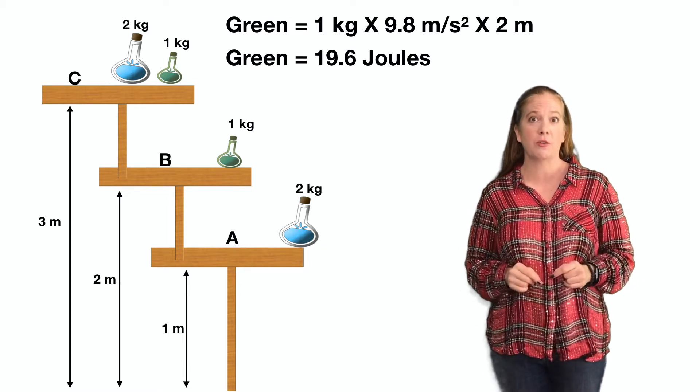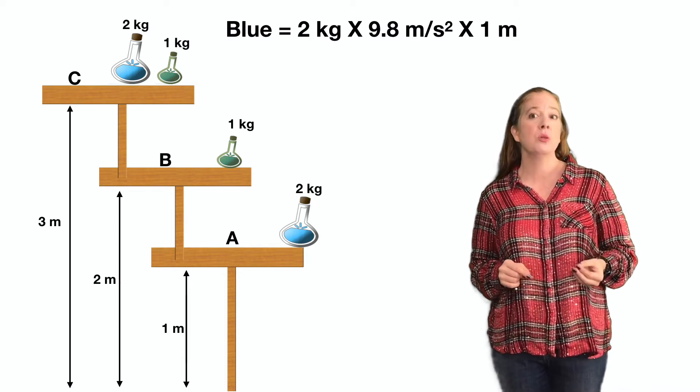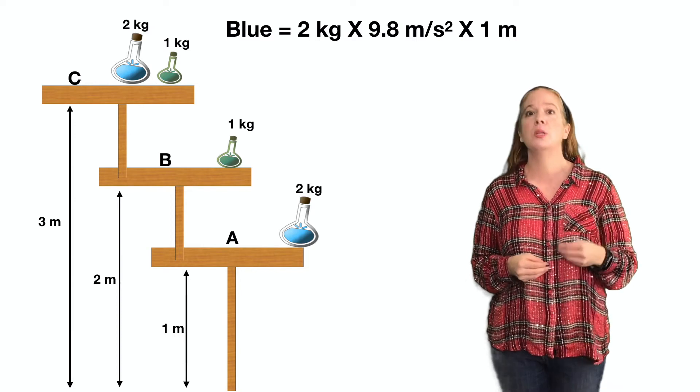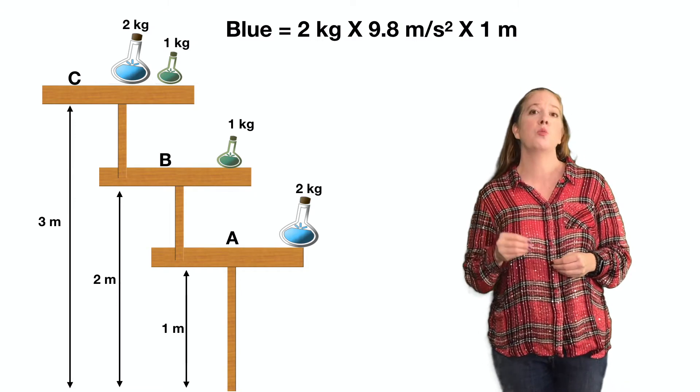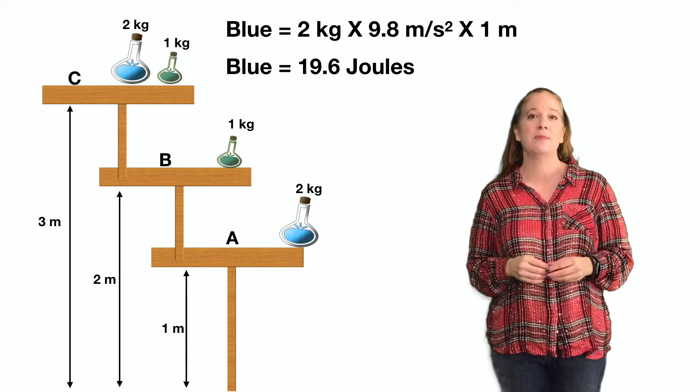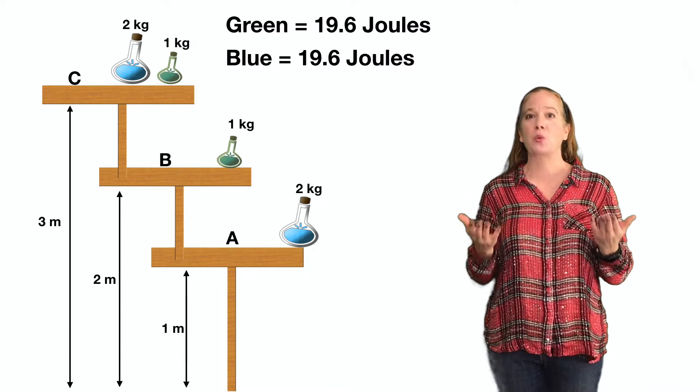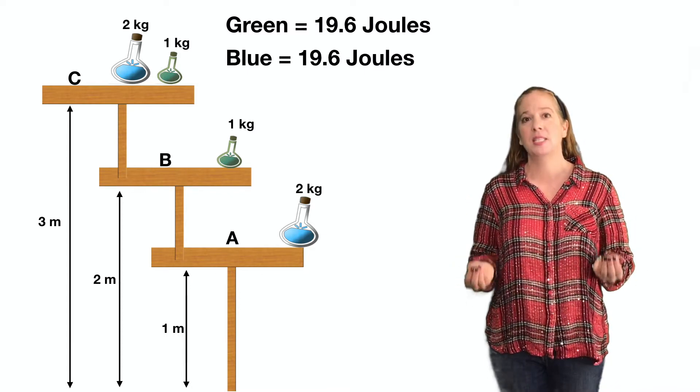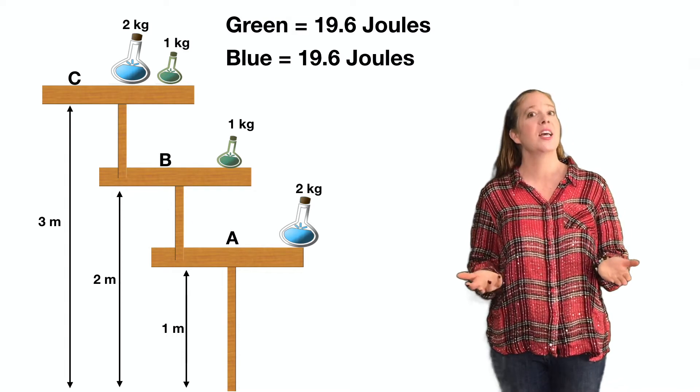Joules is the unit for energy. Now let's see that blue bottle with a mass of 2 kilograms and a height of 1 meter. Again, we plug it into the formula. 2 kilograms times 9.8 meters per second squared times 1 meter gives us 19.6 joules. As you can see, the green bottle and the blue bottle actually have the same potential gravitational energy, even though they have different masses and different heights.